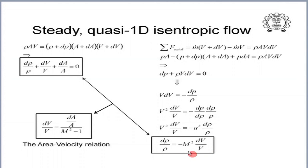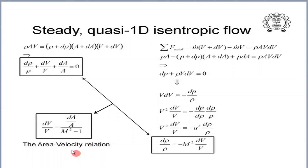By eliminating drho/rho between the continuity equation and the momentum balance, we obtain the area-velocity relation, which tells us how the velocity of the fluid behaves with respect to changes in cross-sectional area depending on the Mach number of the flow. This relation, boxed at the left bottom of the slide, is a very important result — many of you would probably remember seeing it before. We call this the area-velocity relation.